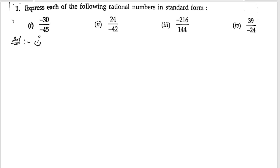First bit: minus 30 by minus 45. We can cancel this minus here. The LCM of 30 and 45 is 15, so we can cancel 30 by 15 and 45 by 15. 15 ones are 15, 15 twos are 30, and 15 threes are 45. So the final rational number is 2 by 3.